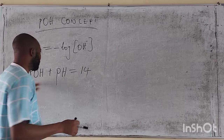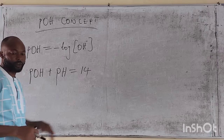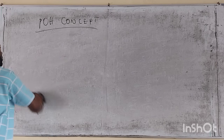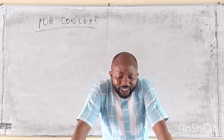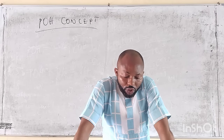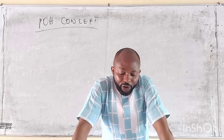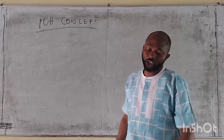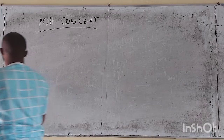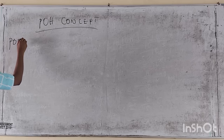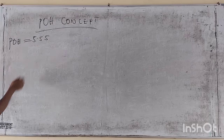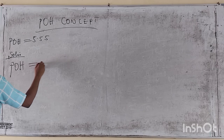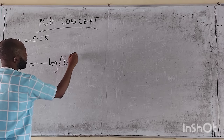Let's take our first question: what is the hydroxide ion concentration in a solution of pOH 5.55? We say pOH equals the negative logarithm of hydroxide ion concentration. If pOH is 5.55, then 5.55 equals minus log of OH⁻.